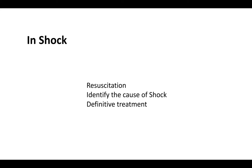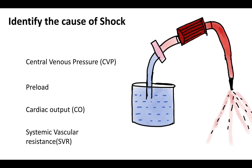In shock, we resuscitate, identify the cause, then go for definitive treatment. To identify the type, we must understand certain hemodynamic parameters. We invoke a model: blood comes to the right heart, goes to the lungs, returns to the left ventricle — the motor — and then goes to the aorta, where there is peripheral vascular resistance.